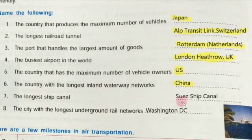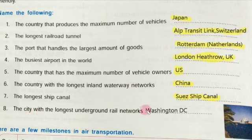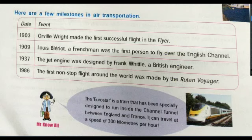The longest ship canal is the Suez Ship Canal. The city with the longest underground rail network is Washington DC — this city has the longest underground rail network. Here are given a few milestones in air transportation, with the date and event listed.